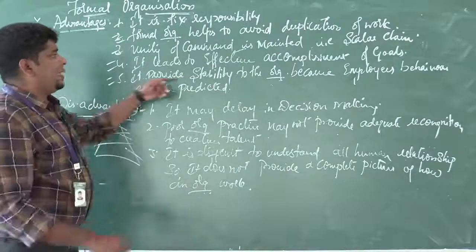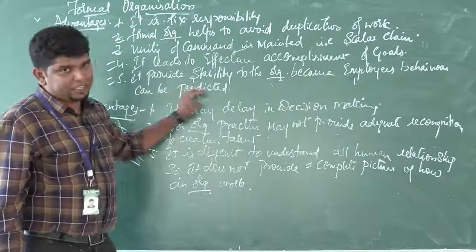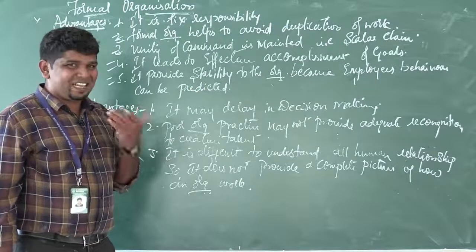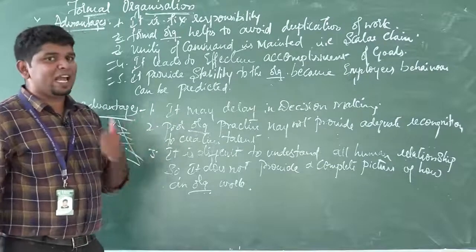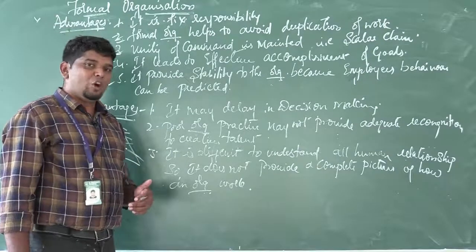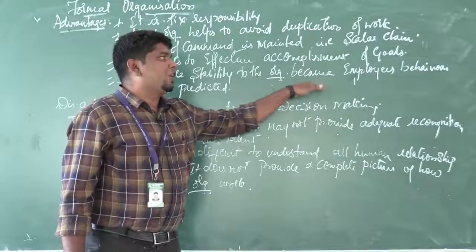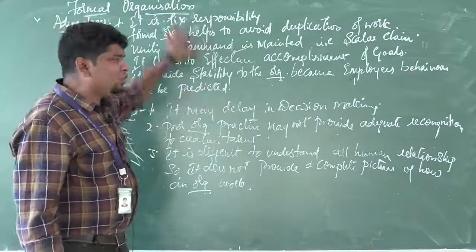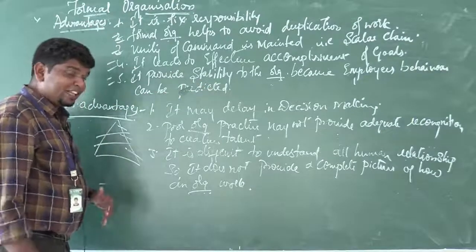Fifth advantage: it provides stability to the organization because employees' behavior can be predicted. You can see and predict what the employees are doing and what their output is at all times. This provides stability to the organization — and this is a major advantage of formal organization.